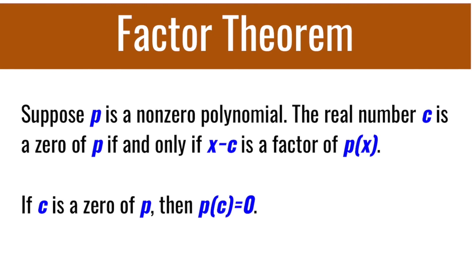Suppose p is a non-zero polynomial. The real number c is a zero of p if and only if x minus c is a factor of p of x. This means that if c is a zero of p, then p of c is equal to zero.